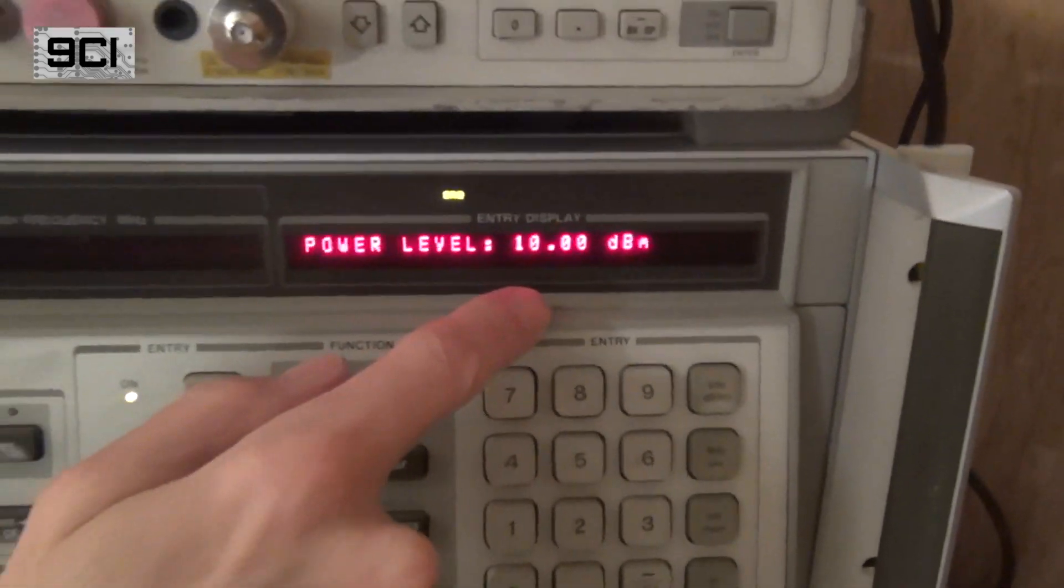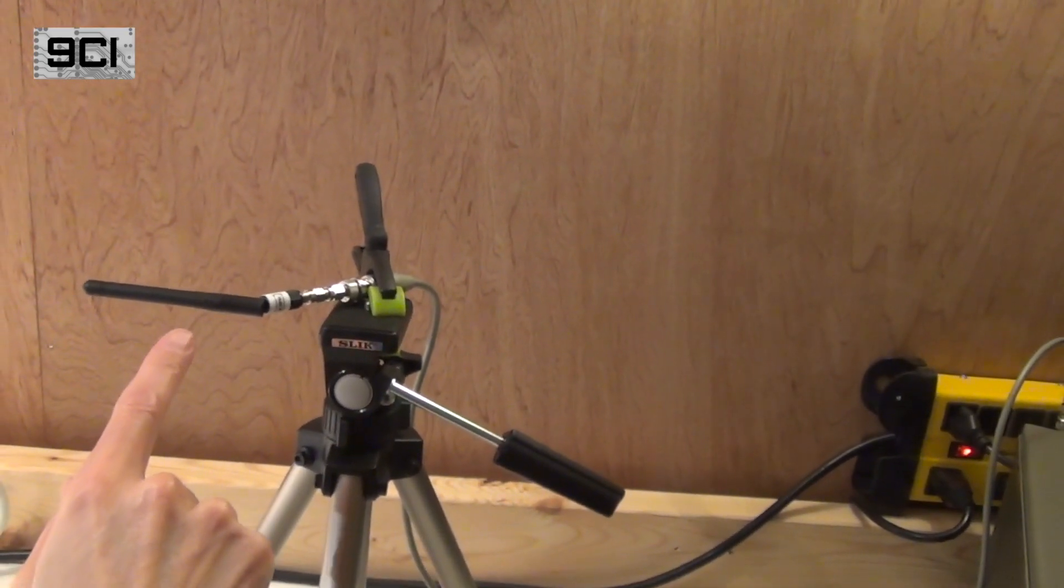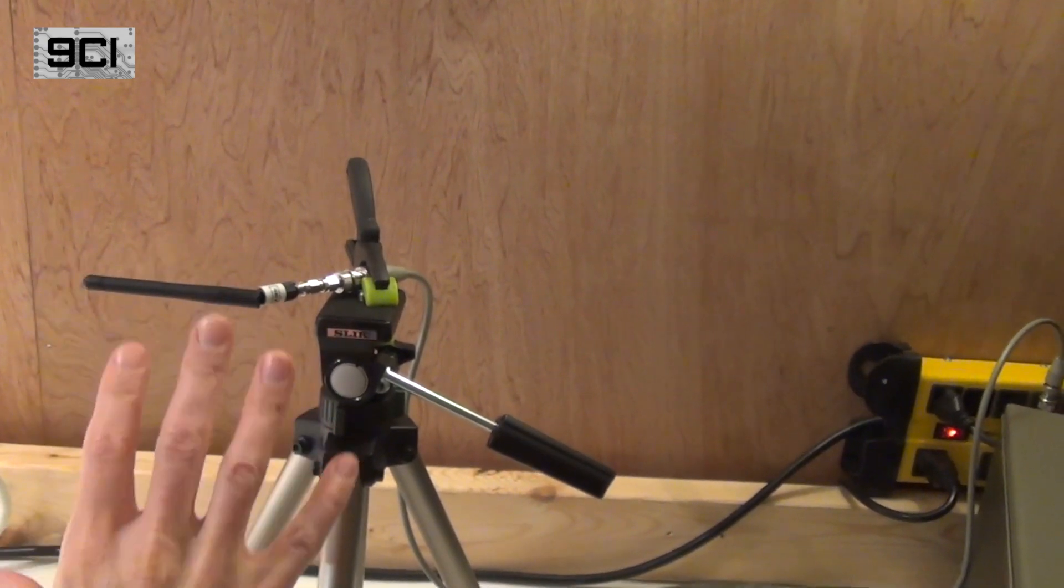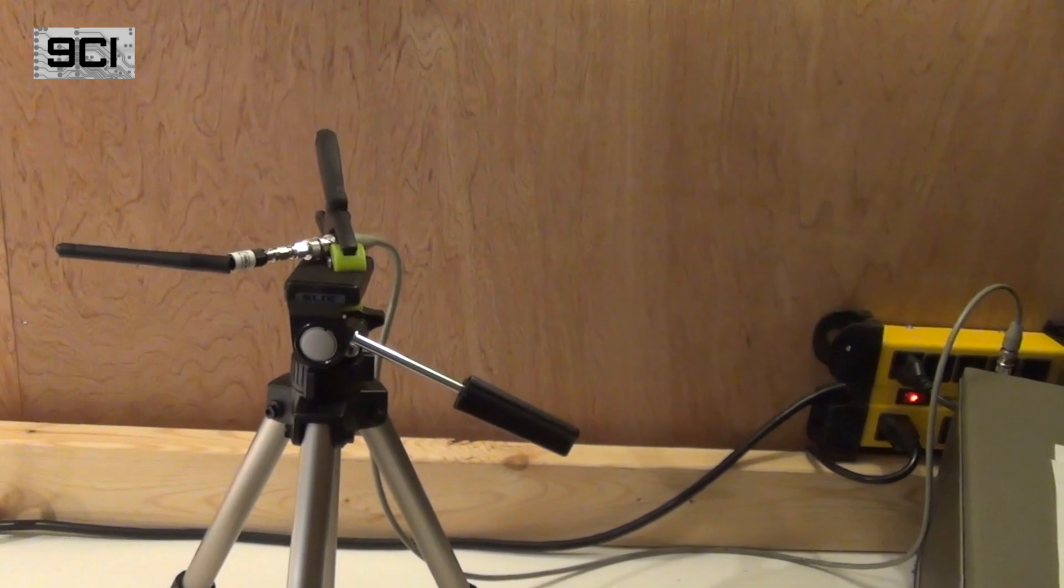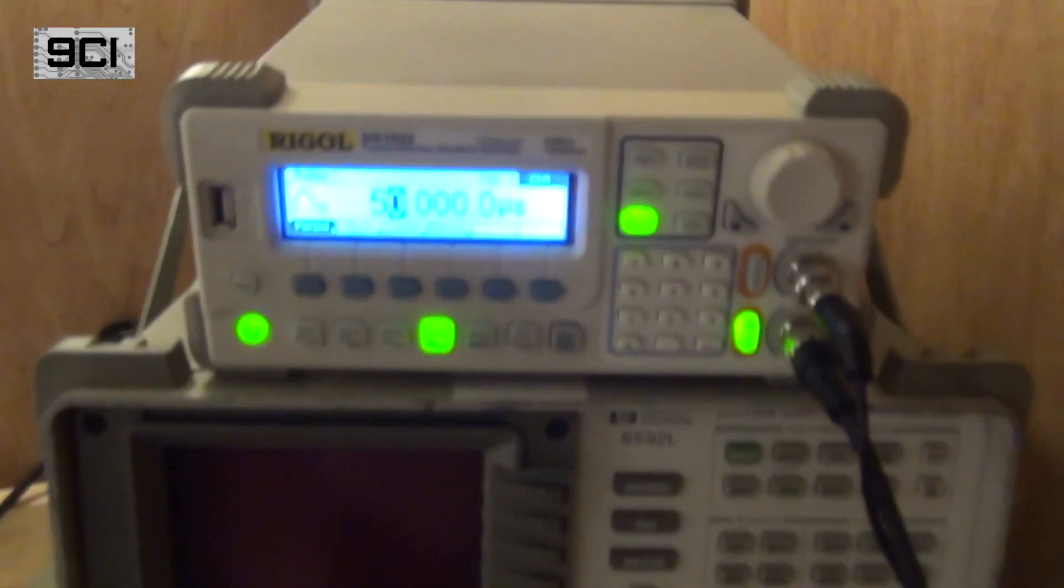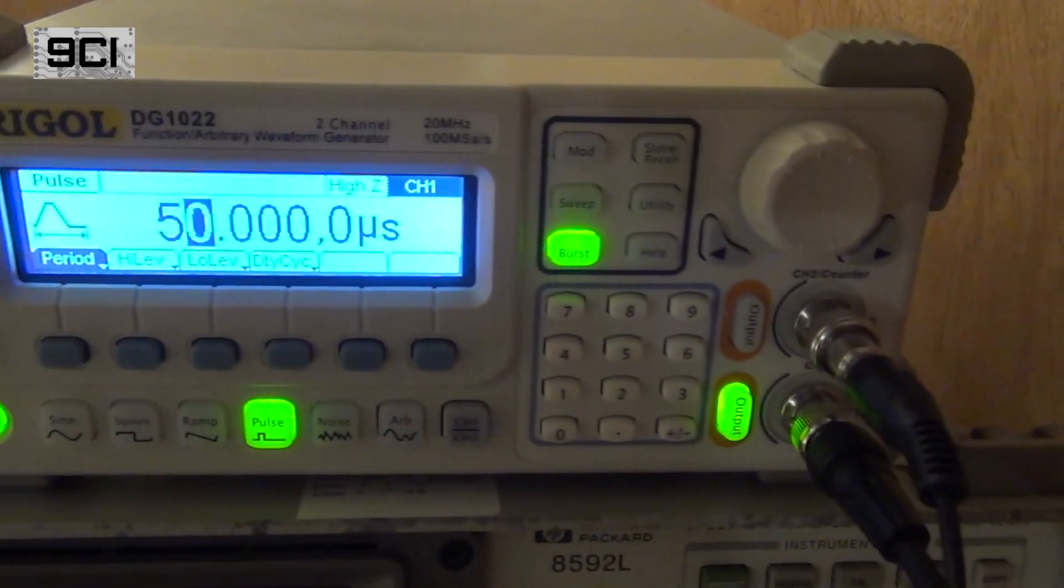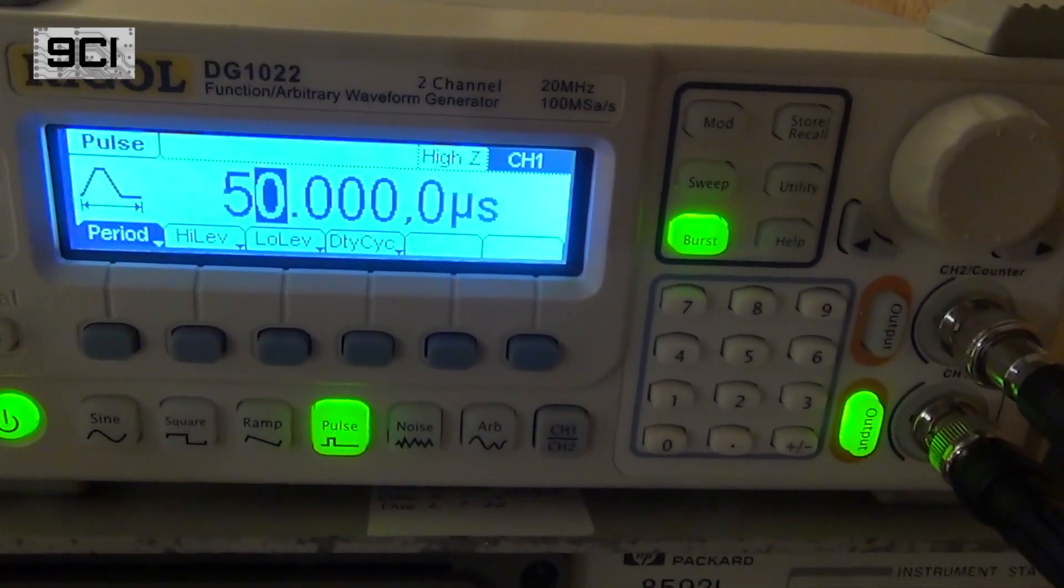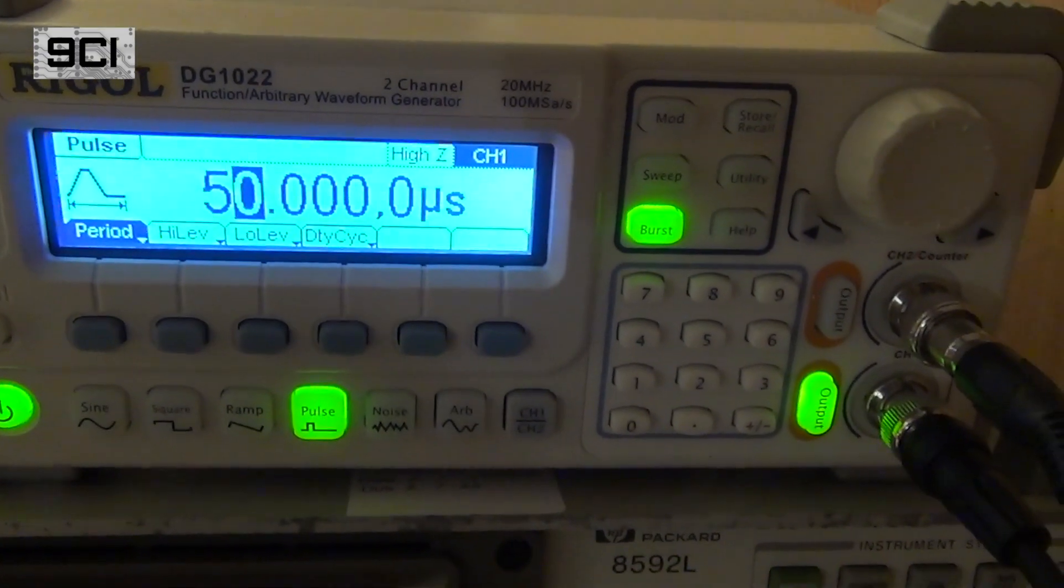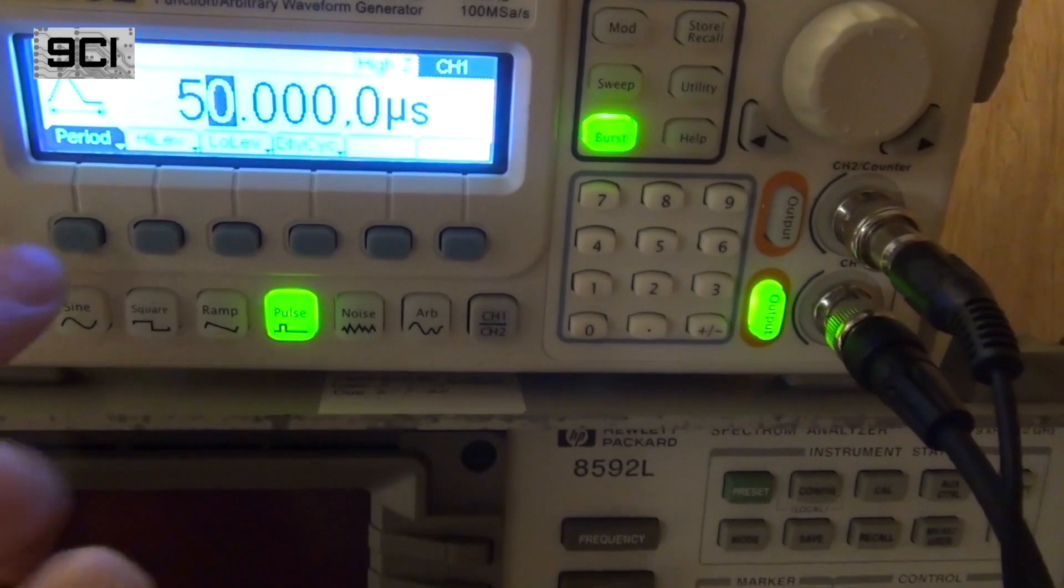The transmitting antenna will be a 2 dBi gain ducky antenna, again at the same position all the time for these tests. To generate these narrow pulses, the HP RF signal generator will be triggered by a Rigel waveform generator and it'll be set up to provide single manually triggered pulses starting at 50 microseconds.